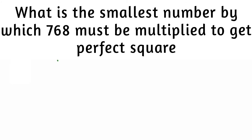Here's a question from squares and square roots: what is the smallest number by which 768 must be multiplied to get a perfect square? We're going to use the prime factorization method.